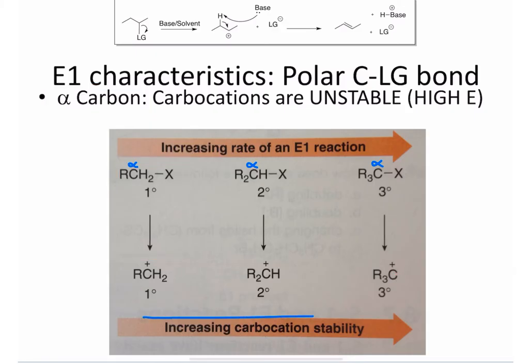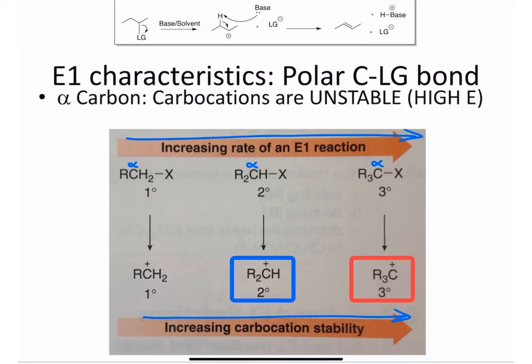The more stable the carbocation, the faster the reaction. Notice that tertiary carbocations lead to the fastest reactions. Secondary carbocations are next. Primary carbocations give very slow, or essentially no, E1 reactions.